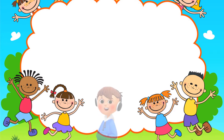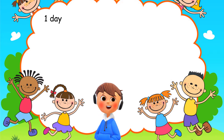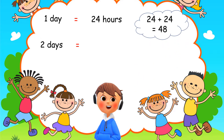Let's have a look at some examples. One day is equal to 24 hours, so two days would be equal to 24 plus 24, which equals 48, or 24 multiplied by 2, which also equals 48. So if one day equals 24 hours, then two days would be 24 multiplied by 2, or 24 plus 24.